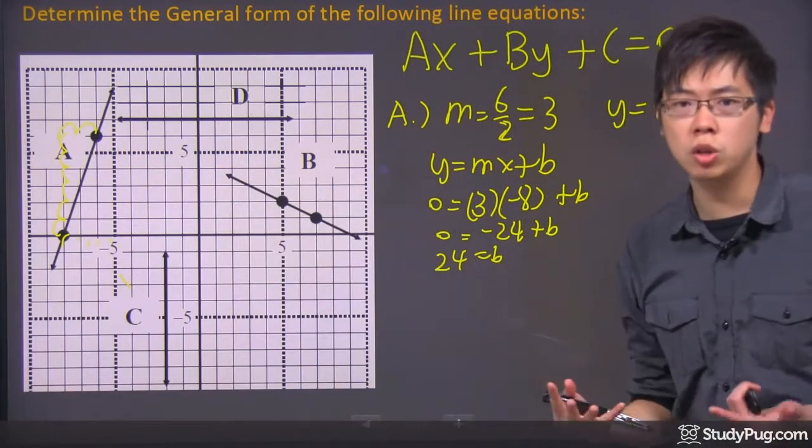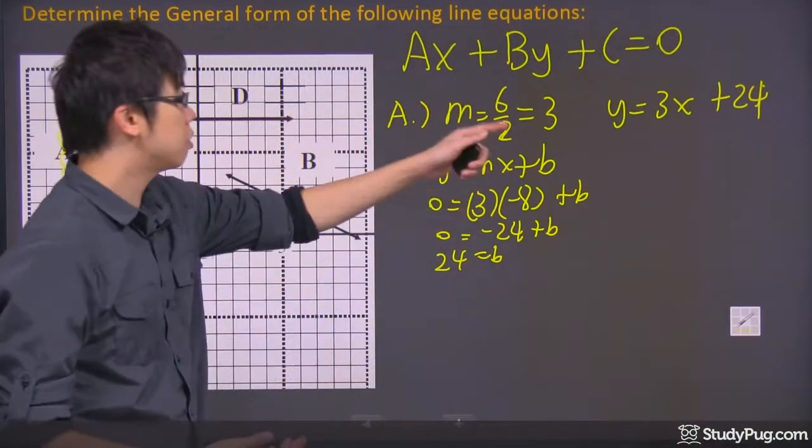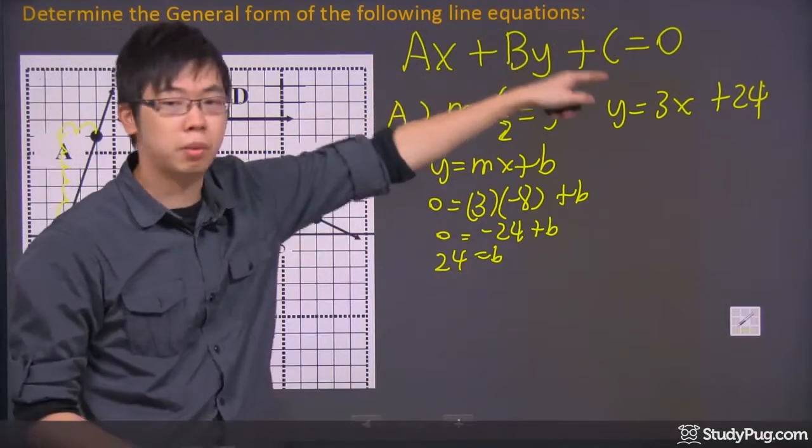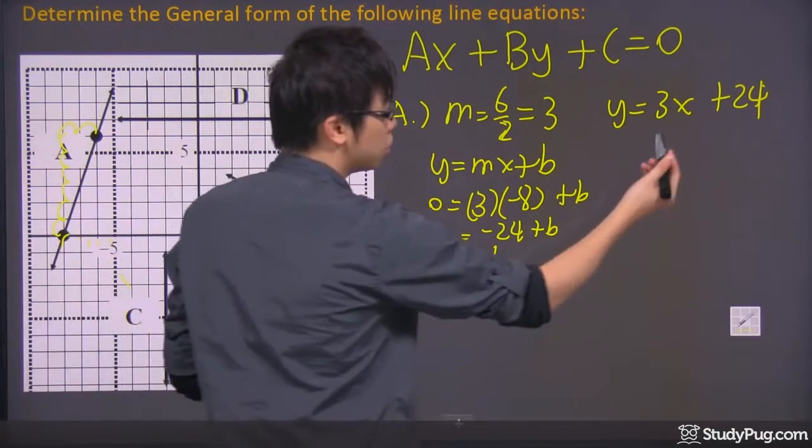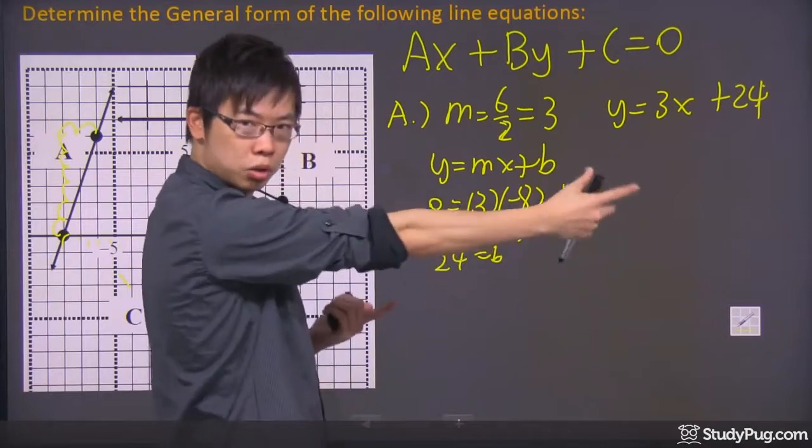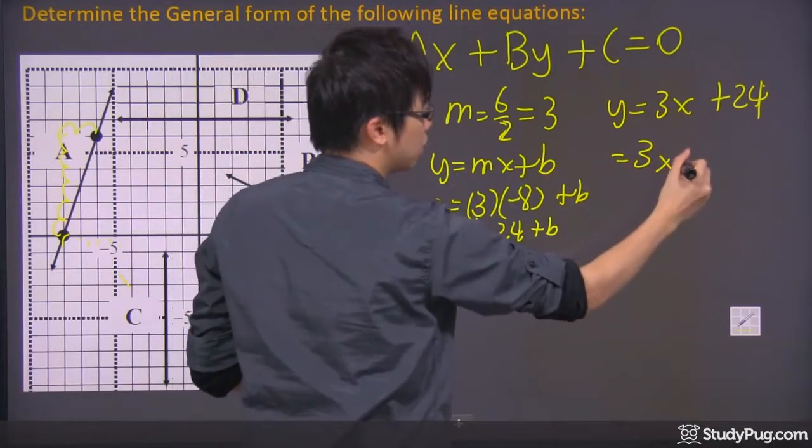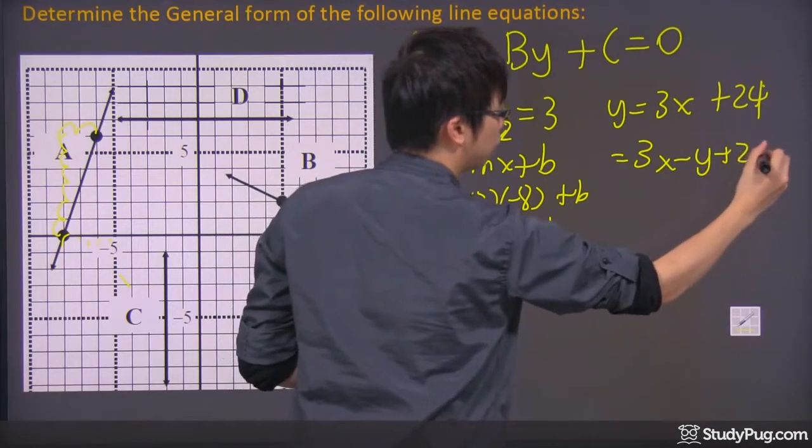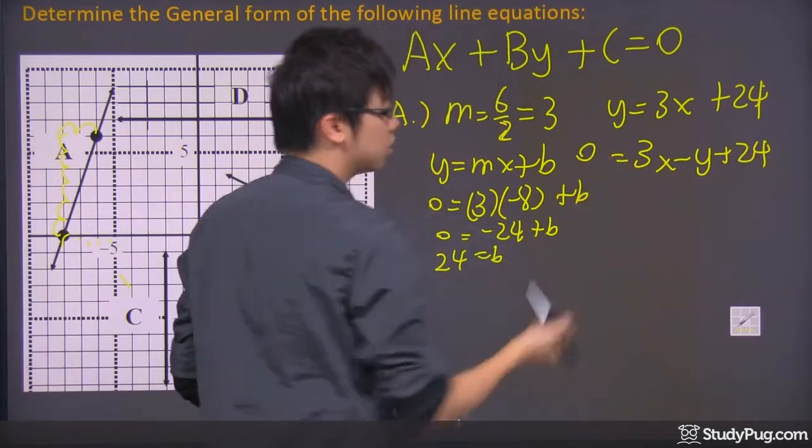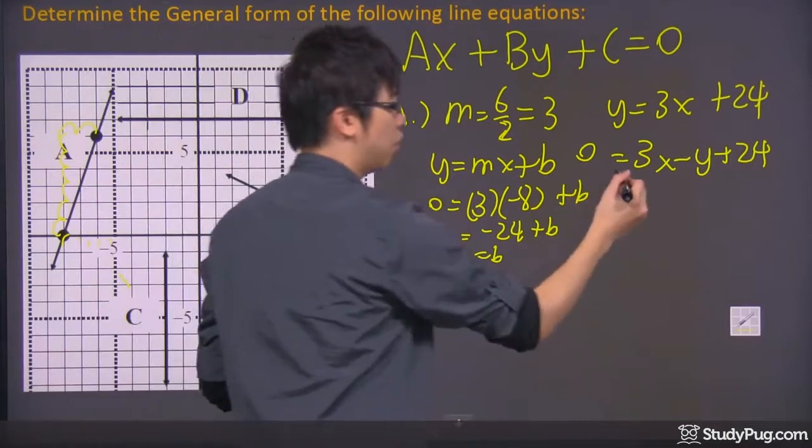But how do we change it into a standard equation? Well, the standard equation says it has to be AX plus BY plus C, right? So why not just leave the X right there? It looks good. Bring the Y to the other side, so we got negative Y and plus 24. And this is your standard equation for line A.